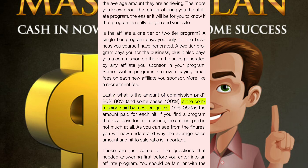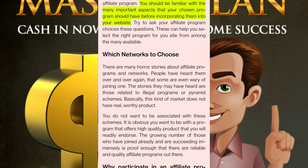Lastly, what is the amount of commission paid? 20% to 80%, and in some cases 100%, is the commission paid by most programs. $0.01 to $0.05 is the amount paid for each hit. These are just some of the questions that needed answering first before you enter into an affiliate program. You should be familiar with the many important aspects that your chosen program should have before incorporating them into your website. Try to ask your affiliate program choices these questions — these can help you select the right program for your site.